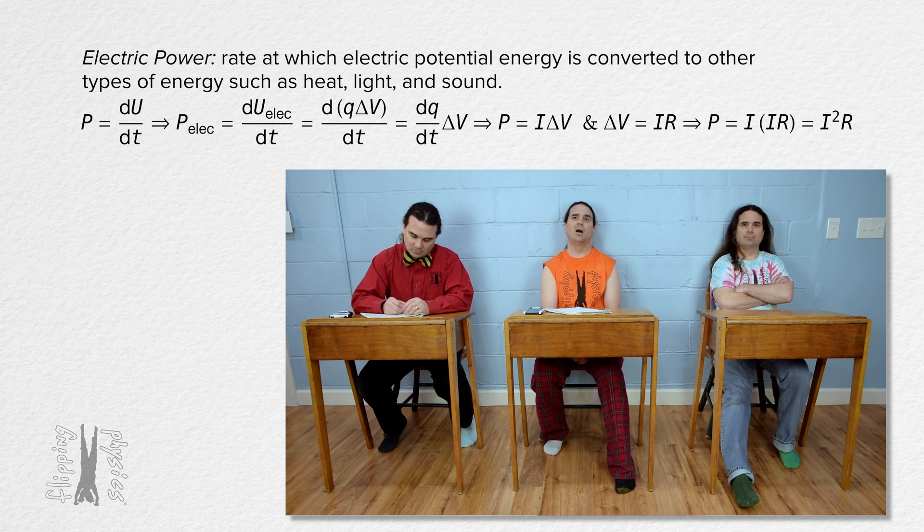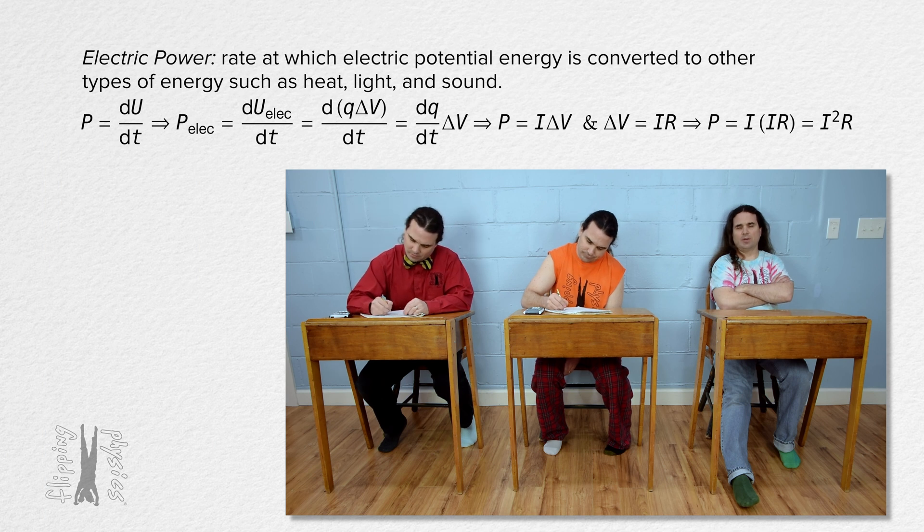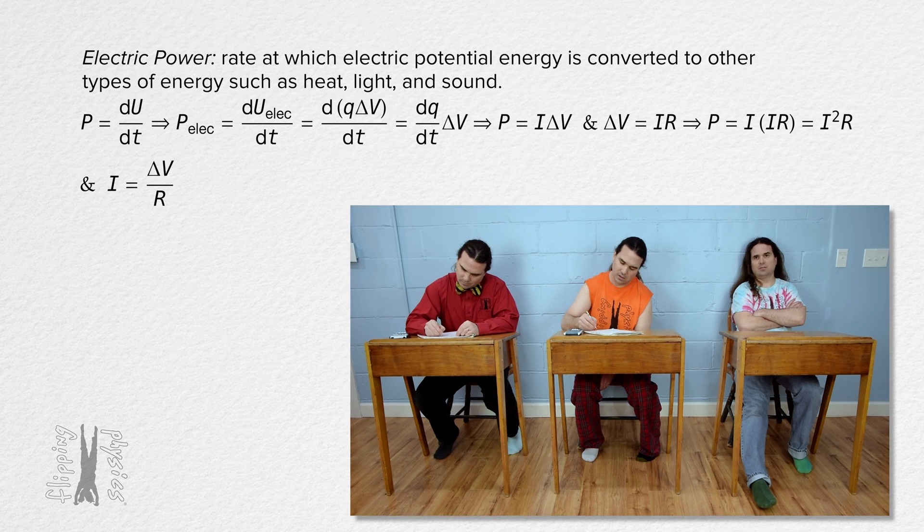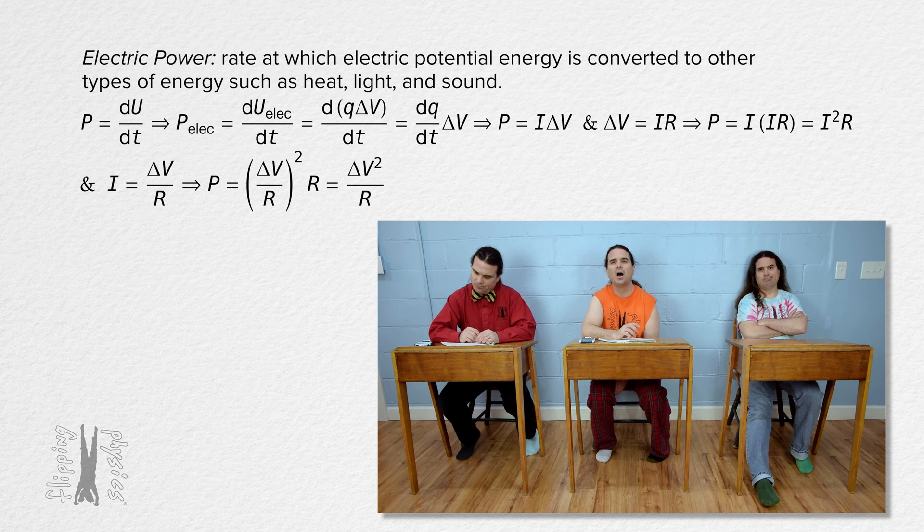Bo, there is one more expression for electric power. Please derive that. Sure. From Ohm's law, we know current equals electric potential difference over resistance. Substitute that into Bobby's equation, and we get that electric power equals the square of electric potential difference over resistance. Yes, thank you Bo.